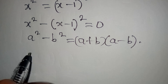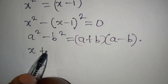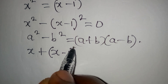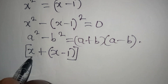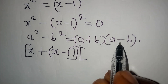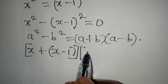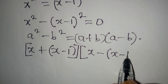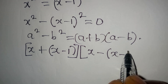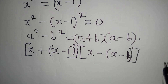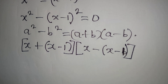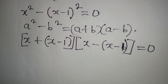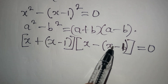So in place of a plus b we have (x plus (x minus 1)), and in the second bracket for a minus b we have (x minus (x minus 1)), and then we equate everything to 0.